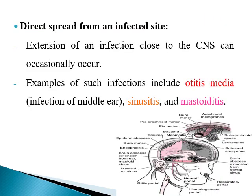The second method is by direct spread from an infected site. For example, if there is mastoiditis, inflammation of the mastoid, or otitis media, infection of the middle ear, or even sinusitis, infection of the ear sinuses, like the frontal sinus — all these infections, if they are neglected, can spread to the CNS.